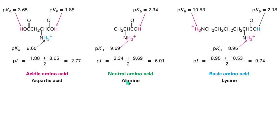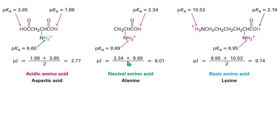In the case of the neutral, you are going to take the pKa for the carboxyl group and for the amino group. That is where we have 2.34 for the carboxyl group and then 9.96 for the amino group, and we divide it by 2. So here we have 6.01.